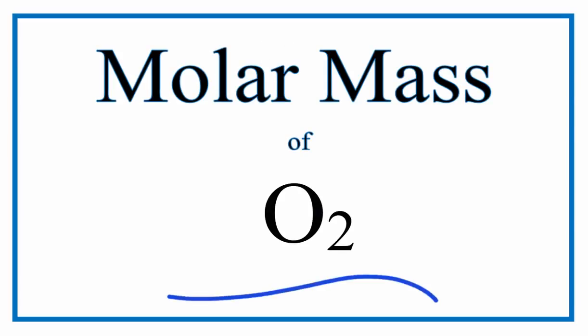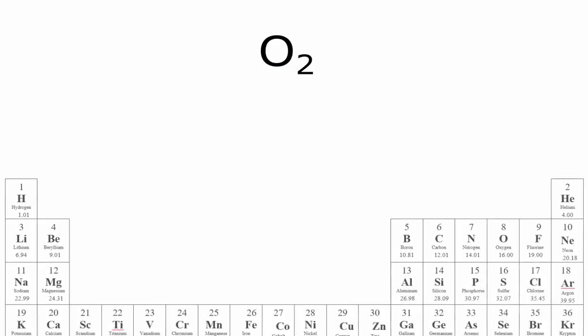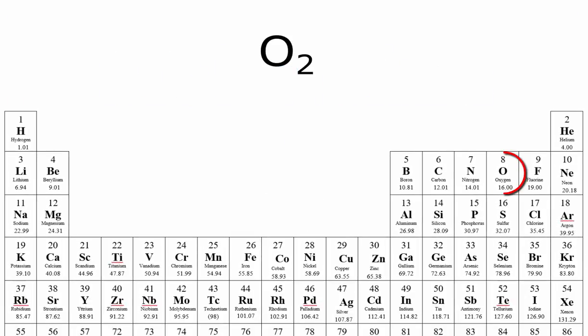To find the molar mass for O2, we'll first find the atomic mass for oxygen. Some periodic tables have different values. The periodic table I'm using has two decimal points and lists the atomic mass for oxygen as 16.00.